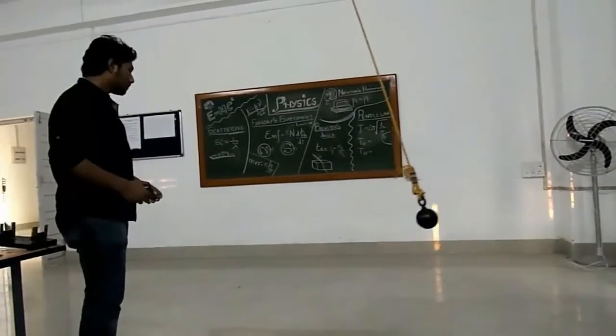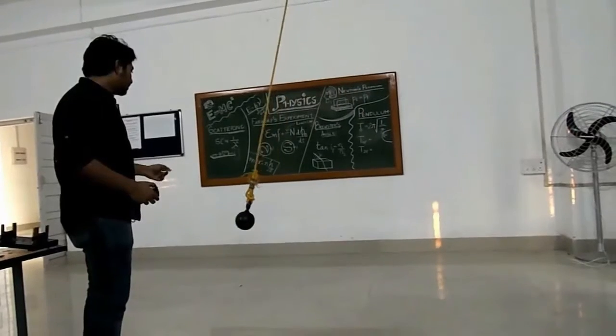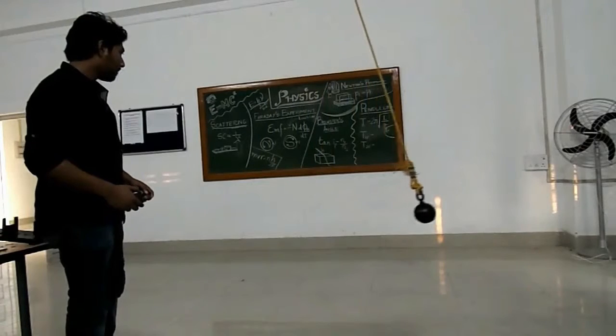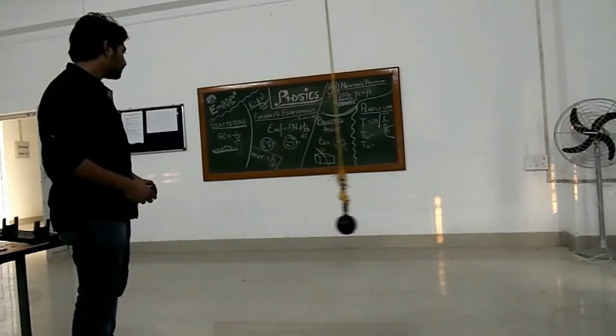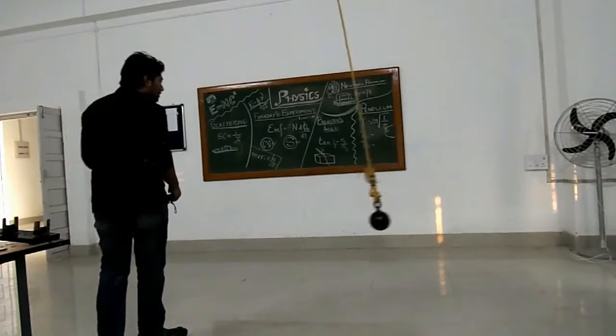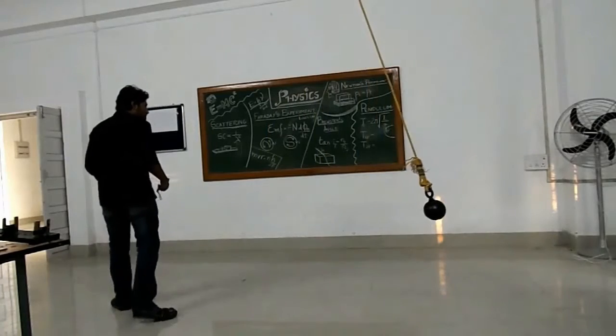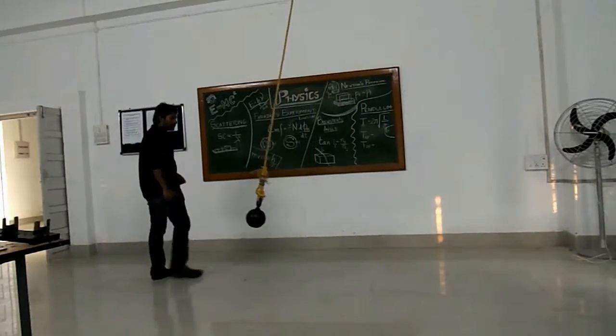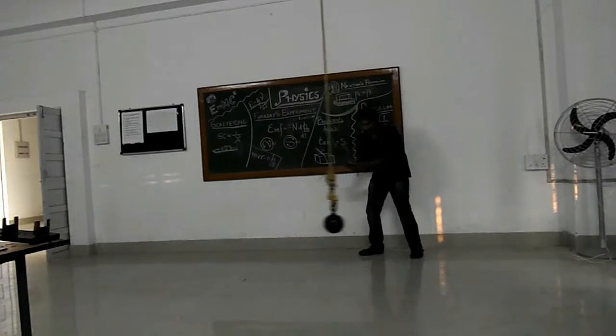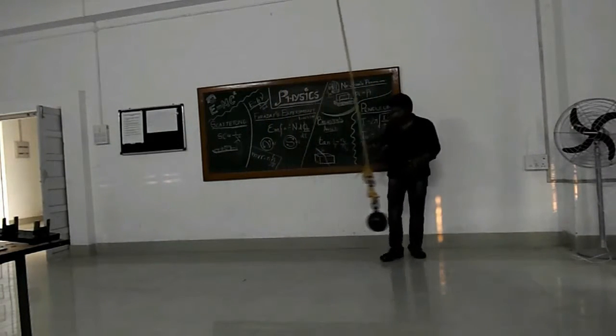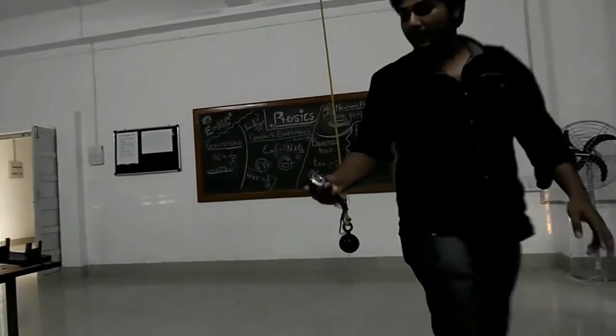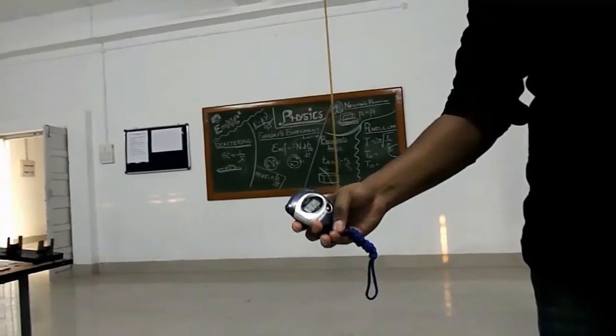Counting oscillations: 1, 2, 3, 4, 5, 6, 7, 8, 9, 10. So as you can see, the time period is 3.54 seconds.